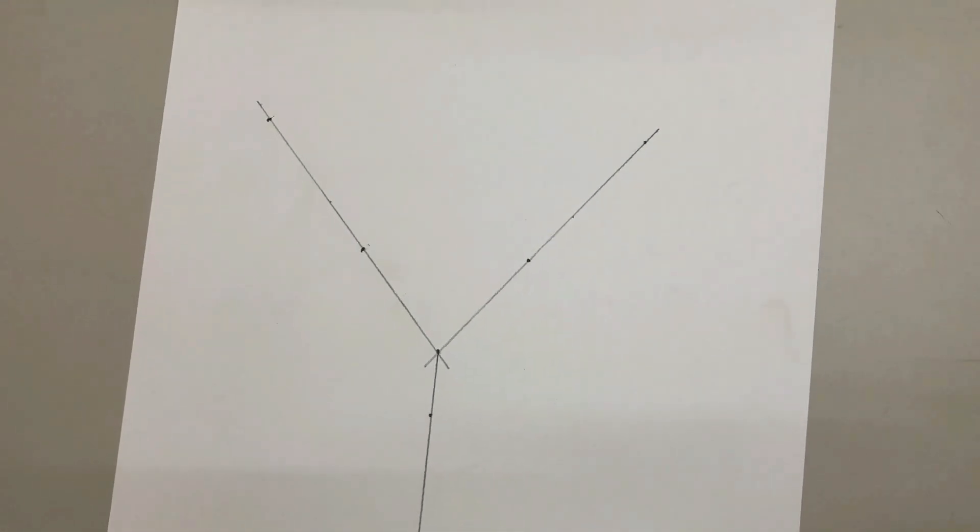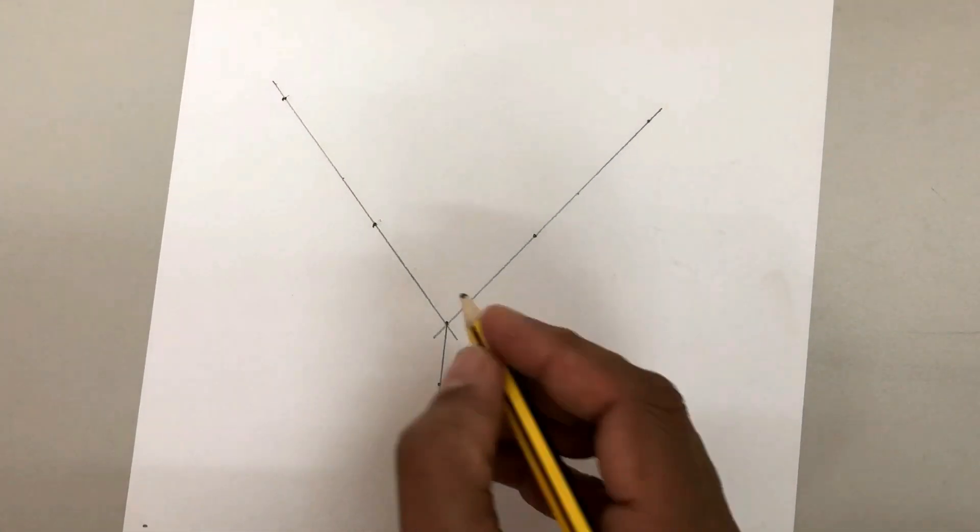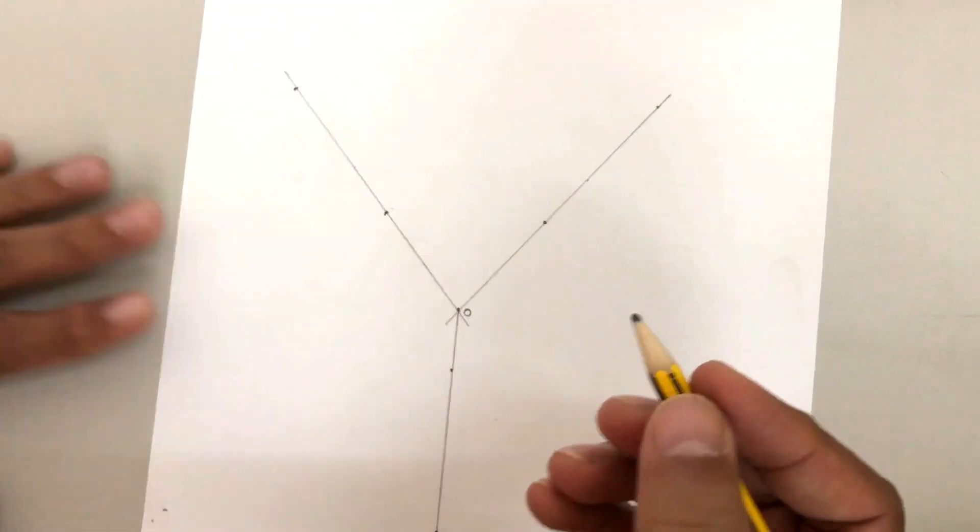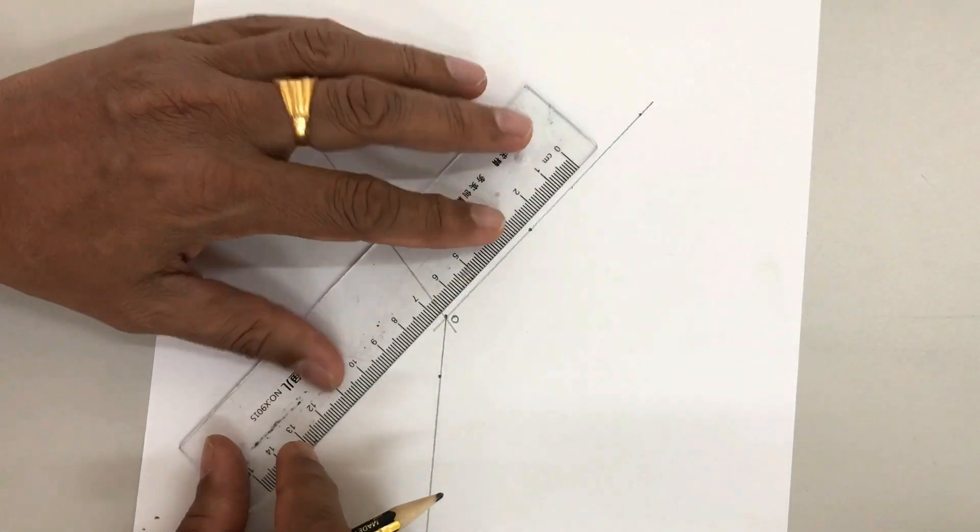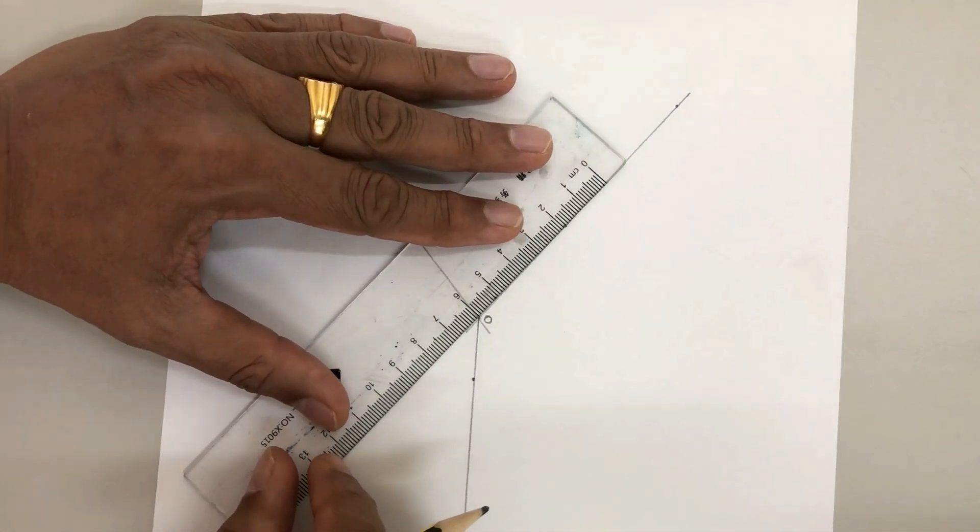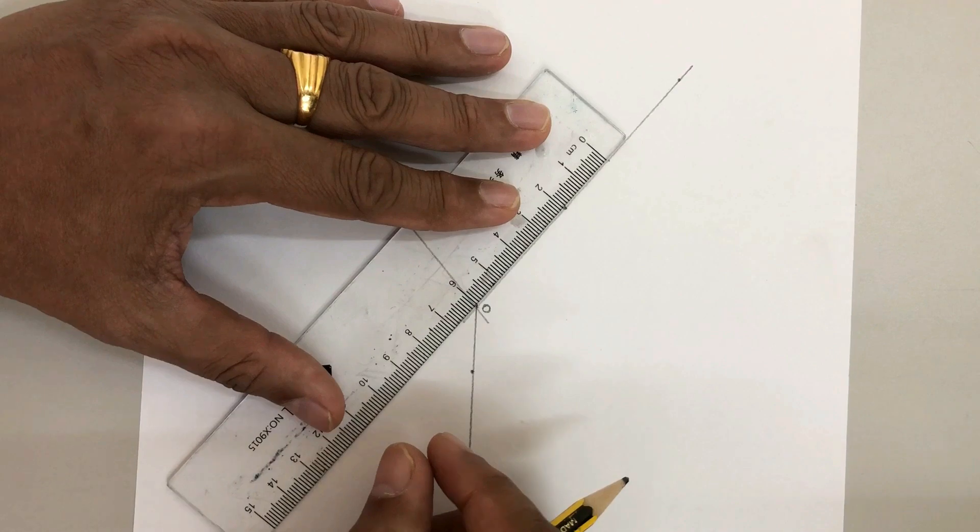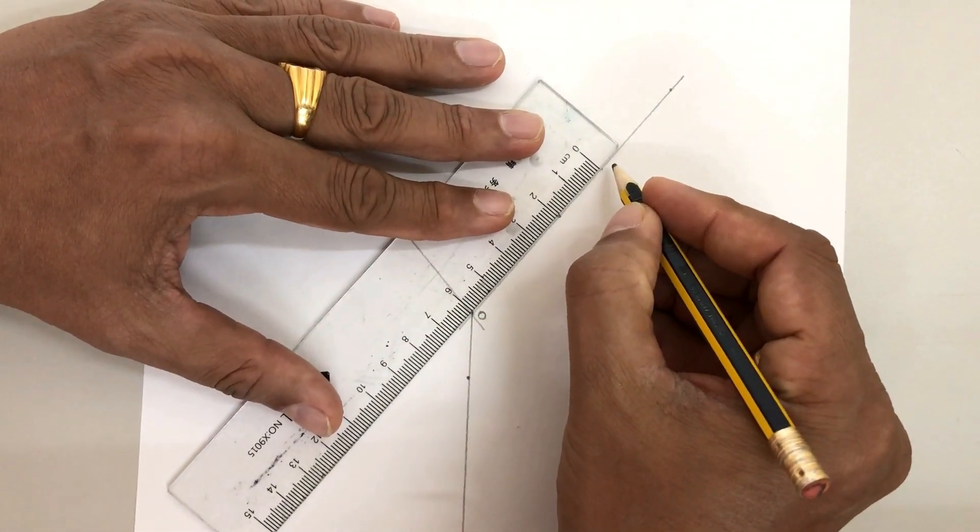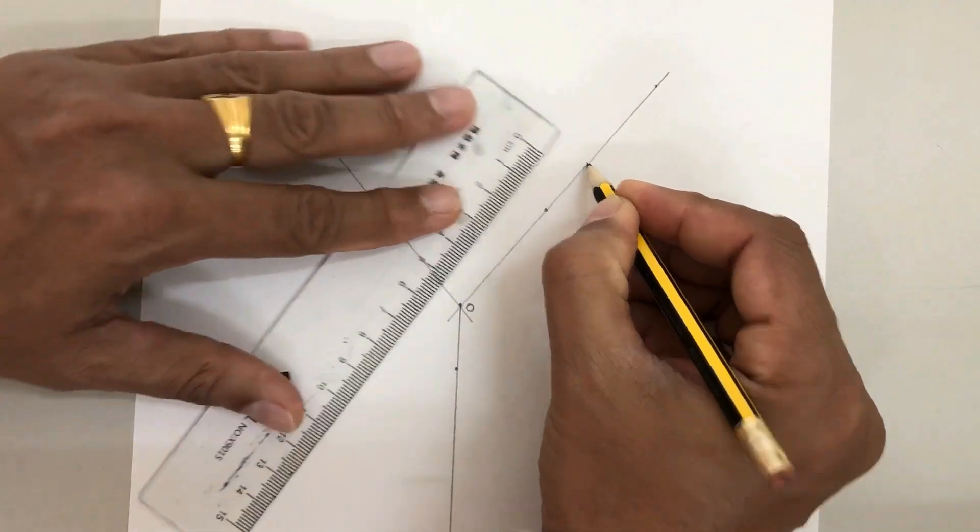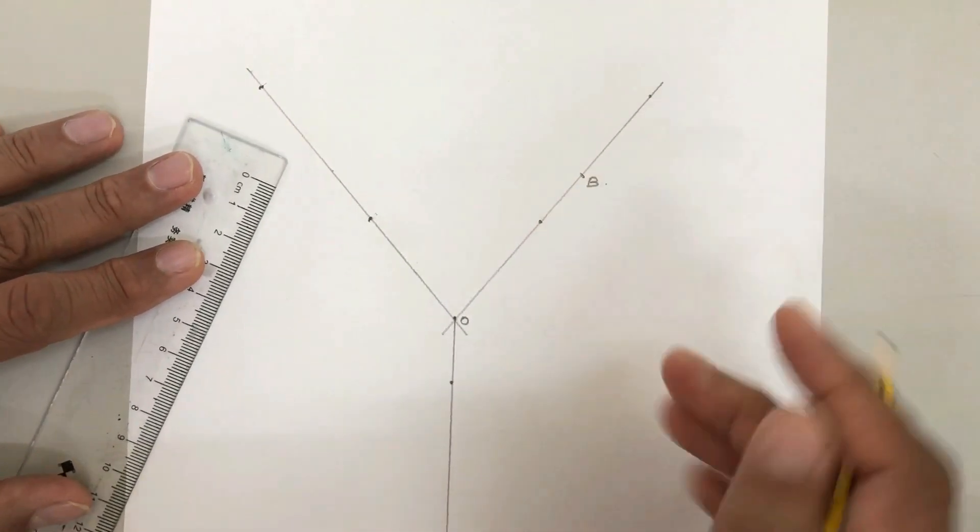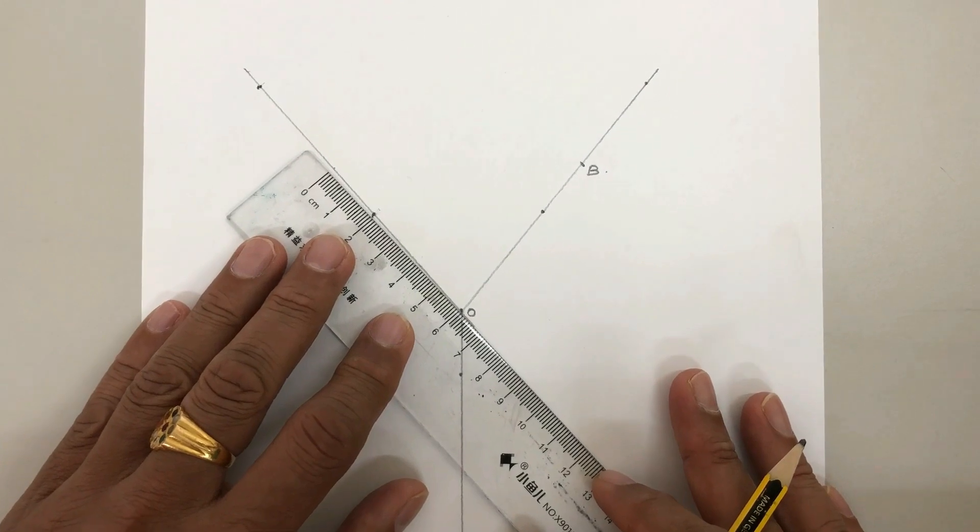Now measure either side from O with a scale. So if I measure here, we can take 6 centimeters here because 150 gram weight was equal to 6 centimeters. So we mark a point over here and mark it as B.